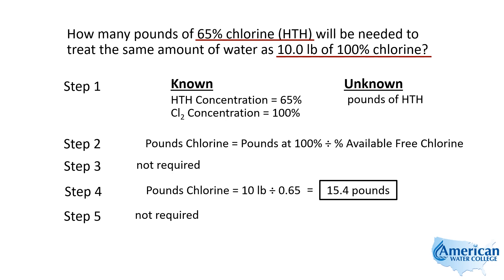Basically, if you have pure chlorine — in this case 10 pounds — and they want to know how many pounds of 65% chlorine you need, just take that 10 pounds and divide it by 0.65. If it's 12% hypochlorite, you would divide 10 pounds by 0.12. Just remember: take the pounds of pure chlorine and divide by the percent available in the other type of chlorine, and that gives you your answer.